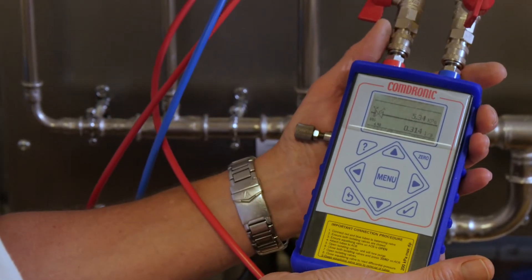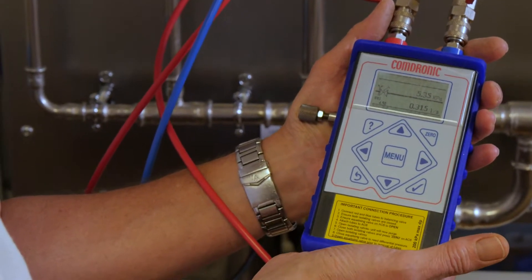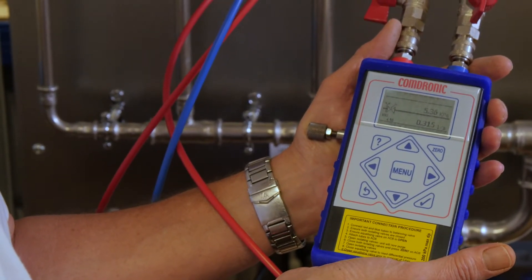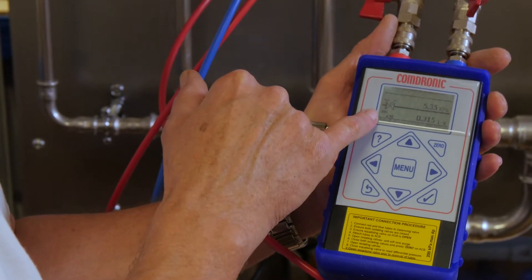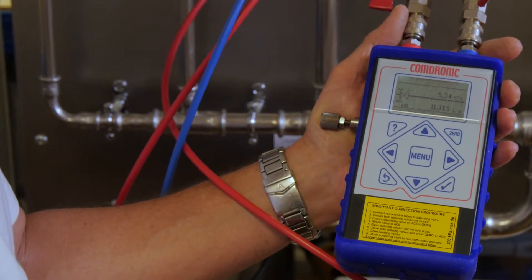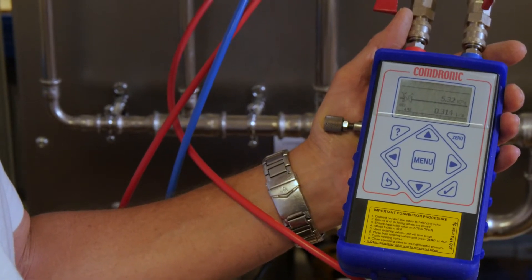And we have a differential pressure across the valve of 5.35 kilopascals. And using the KVS for this valve which is 4.9, that equates to a flow rate of 0.314 litres per second.